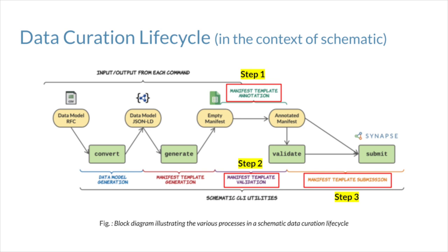To ensure that the data are annotated in a standardized way, in step 1 Schematic provides researchers with a spreadsheet interface with pre-filled columns for a specific data type for annotation. For example, a spreadsheet for patient biospecimen metadata. In the context of Schematic, a data type is any relatively high-level biomedical component such as an assay data and patient demographics data component.